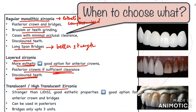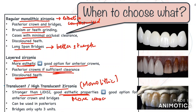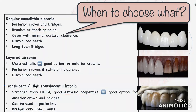Coming to the translucent or high-translucent zirconia, these are a newer generation of monolithic zirconia crowns. They present as a high-translucency material that precludes the use of a veneering layer due to improved optical characteristics. These have excellent aesthetics, are more conservative than the veneered ones, and have better strength than glass ceramics. They are great for anterior restorations, but they have lower strength and fracture toughness. In cases of bridges or multiple units, limit it to only 3 units as it has less strength and is more susceptible to fracture.